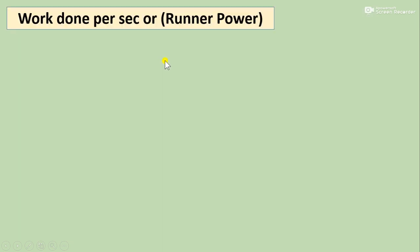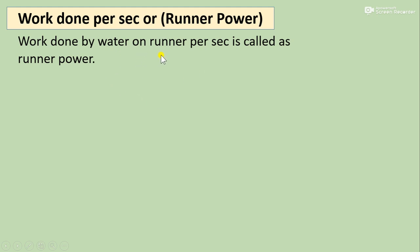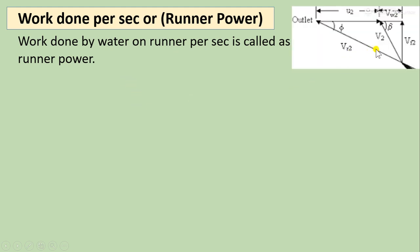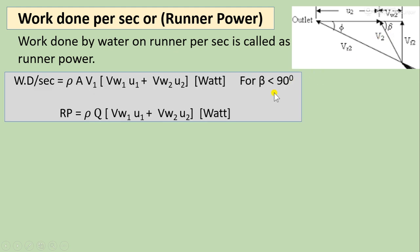Work done by water on the runner per second is called runner power. From the outlet velocity triangle, when the vane angle beta is less than 90°, runner power = ρ·A·v1·(vw1·u1 + vw2·u2) in watts. Since area × velocity equals discharge Q, runner power can also be written as ρ·Q·(vw1·u1 + vw2·u2) in watts.